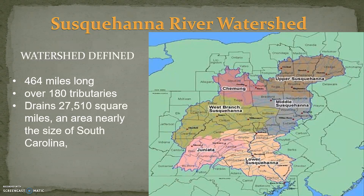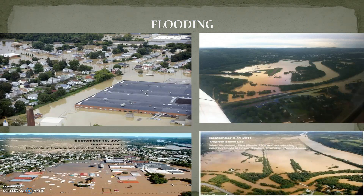The land used throughout the watershed is industrial, residential, commercial, and agricultural. There are over 180 tributaries or smaller streams that feed into the different sections of the Susquehanna River, and over 4.1 million people live within the watershed. The Susquehanna River is one of the most flood-prone areas in the entire nation.